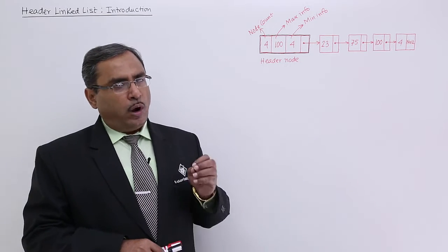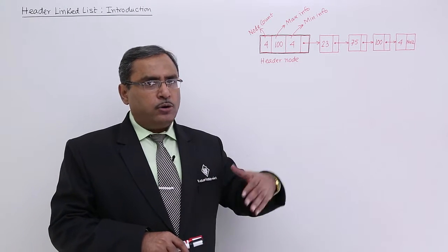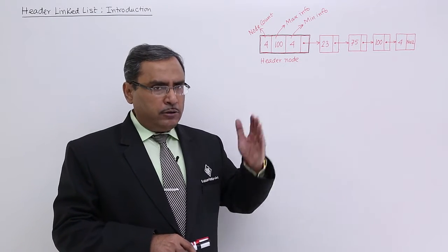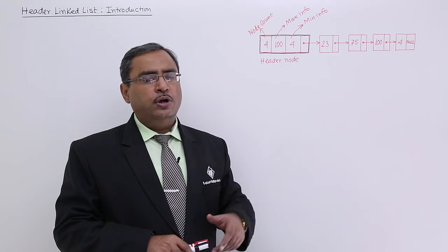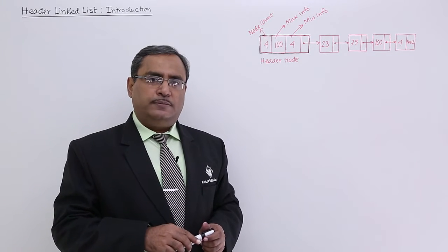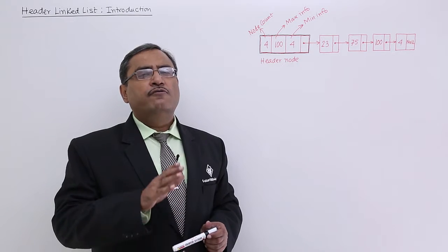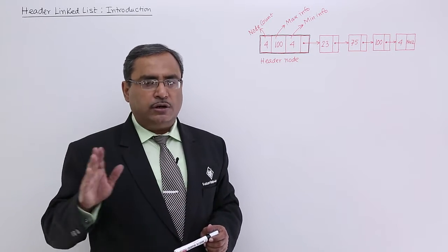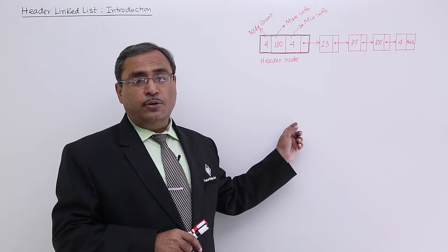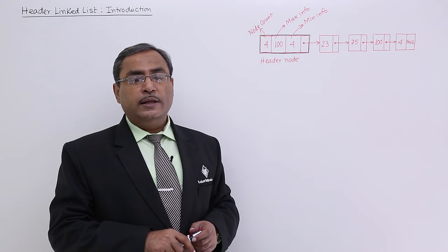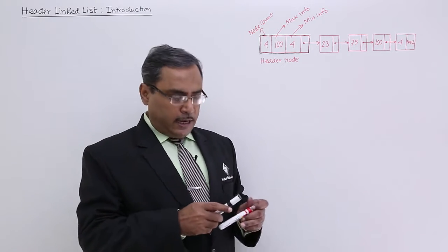Issue number 2: In algorithms we wrote prior to this session, we typically wrote PTR = start for traversing or searching. Here, the algorithm will be written as PTR = start->next.